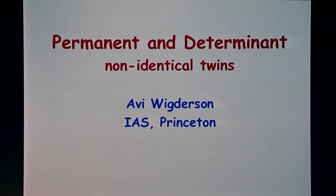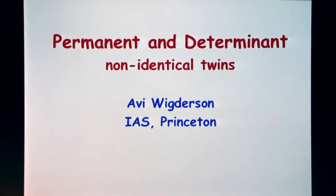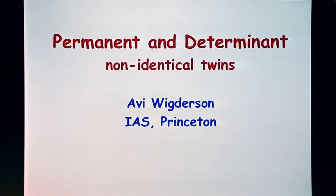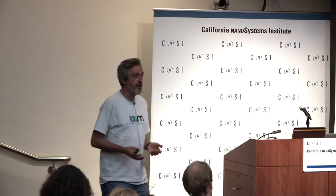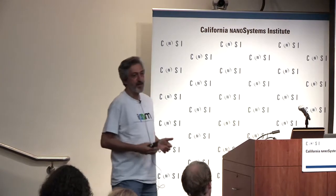This talk will be less high level than yesterday's. I'm going to violate all sorts of good rules about how to give a good colloquium. I'm going to tell you about these two amazing twin polynomials, the determinant and the permanent. I'm going to cram a lot of material of different nature, so it will require lots of context switching.